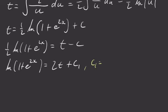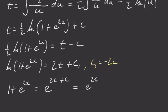So that becomes natural log 1 plus e to the 2x equals 2t plus c1. And c1 is just equal to negative 2c. Negative 2c is a constant because c is a constant. So c1 is a constant. So I don't need to have all of that extra stuff to confuse me. Now I'm going to use my log laws to get rid of that natural logarithm. So I get 1 plus e to the 2x equals e to the 2t plus c1. And this is the same as e to the 2t times e to the c1.